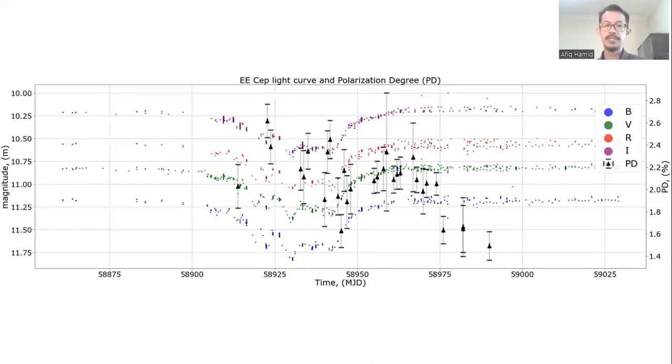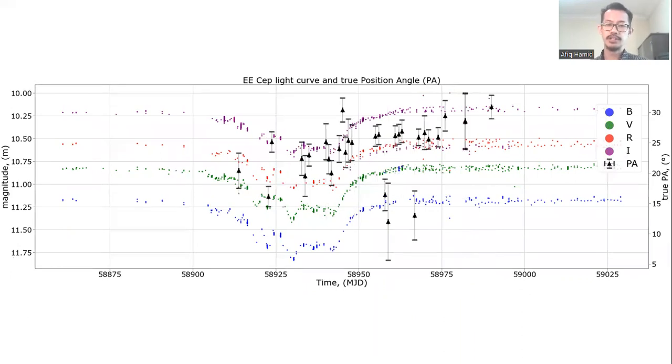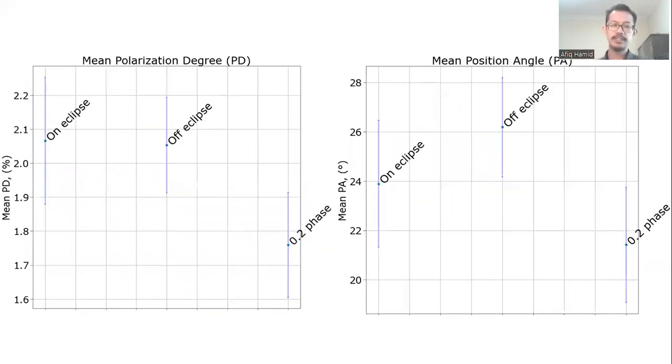Now, the maximum PD during the eclipse was 2.6 percent, and this occurred during the time of the blue maxima on the left of the photometric minimum, and the minimum PD is less than 1.5 percent immediately after the eclipse. The changes of PA were unfortunately marked by outliers during the egress, but the total difference from beginning to end was a change of 10 degrees. The average PD of our entire data set is 2 plus minus 0.017 percent, and the average PA in total is 24 plus minus 2.4 degrees.